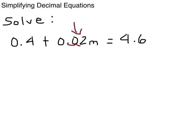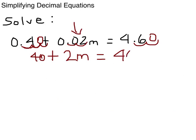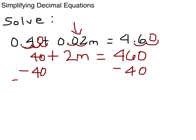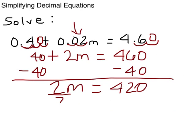So we need, if we move this over 2, then we have 2m. But we can't do that and keep everything equal unless we do it here: 1, 2, which would be 40, plus 2m equals, and then we've got to move it 2 here, which would be 460. And then we're going to solve our equation like we normally would. Subtract 40 from both sides. We have 2m equals 420. And we're going to divide by 2 on both sides. And we're going to have m equals 210.